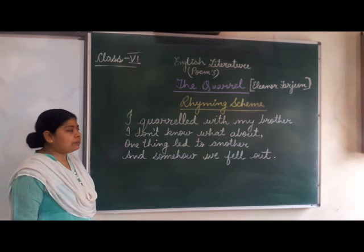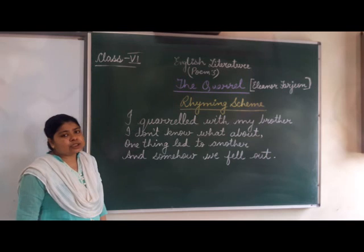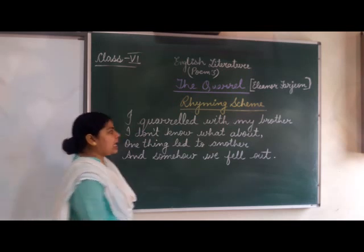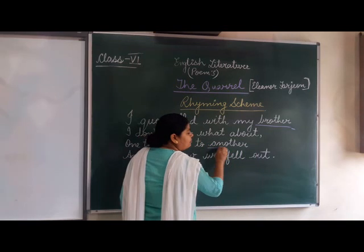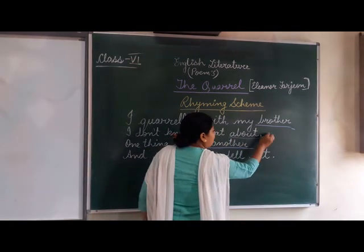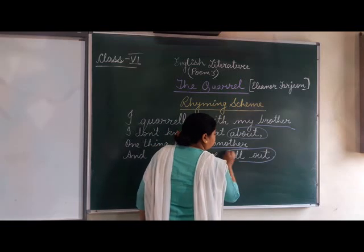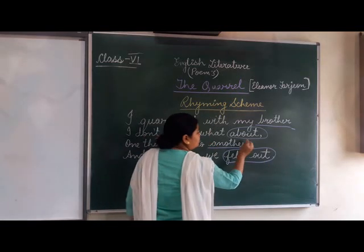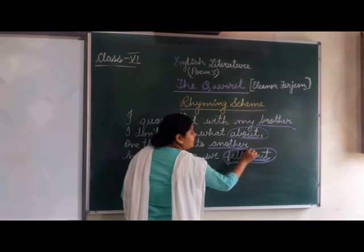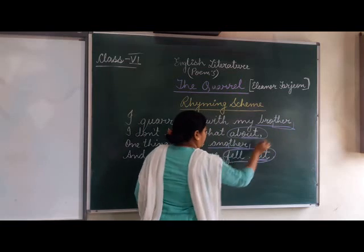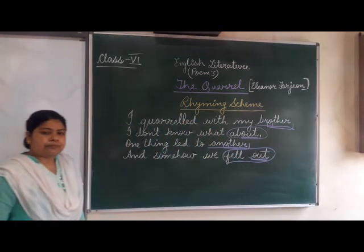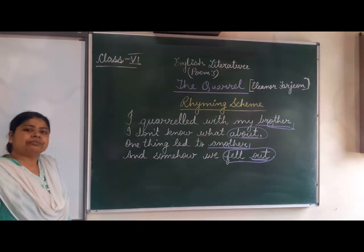When we read this poem: 'I quarrel with my brother. I don't know what about. One thing led to another and so forth, we fell out.' Now we are trying to find the rhyming words. As you can see, 'brother' is rhyming with 'another.' The O-U-T portion is the same in both 'about' and 'out,' and the T-H-E-R portion is the same in both 'brother' and 'another.' So we have identified the rhyming words here.